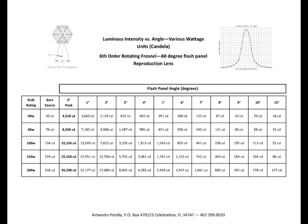The peak intensity is measured with the meter in line with the front of the optical panel. Various wattages were tested from 40 to 200 watts. Peak intensities were measured from 4,500 to 35,000 candela respectively. The bare light source of the 100 watt bulb is 134 candela.